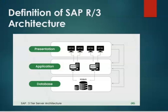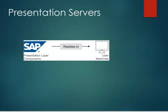SAP R/3 — often referred to as SAP R/3 — where SAP stands for Systems, Applications and Products in Data Processing, and R stands for Real-Time Data Processing. The three in R/3 represents the three-tier architecture consisting of the presentation layer, application layer, and database layer, which collectively form the foundation of SAP R/3 architecture.